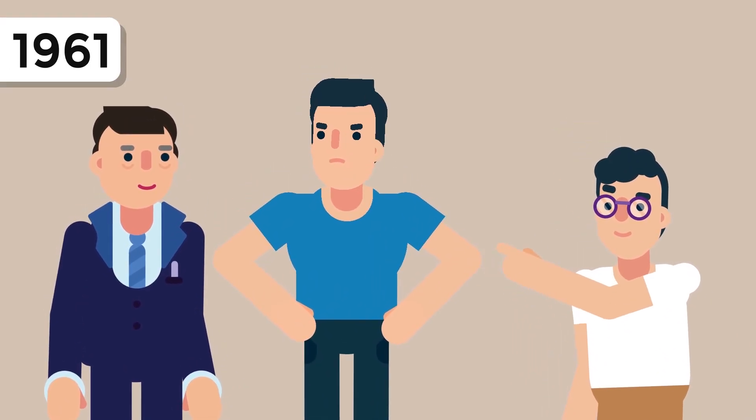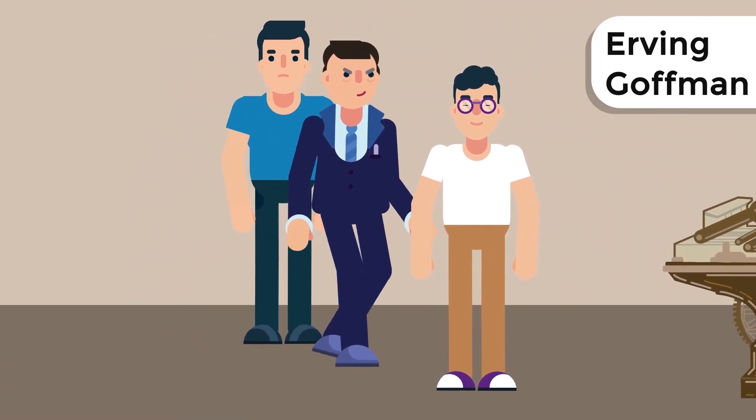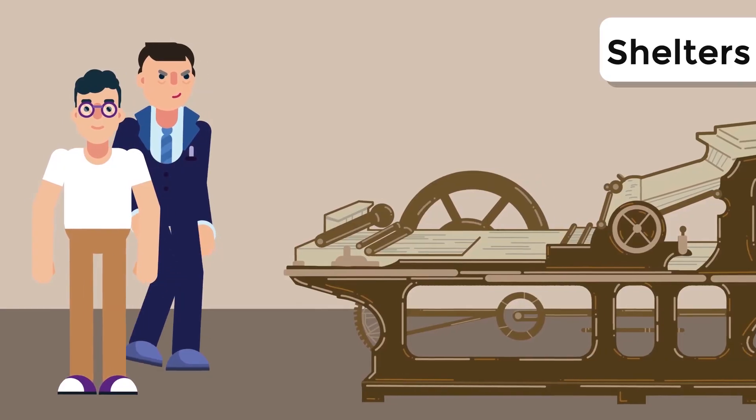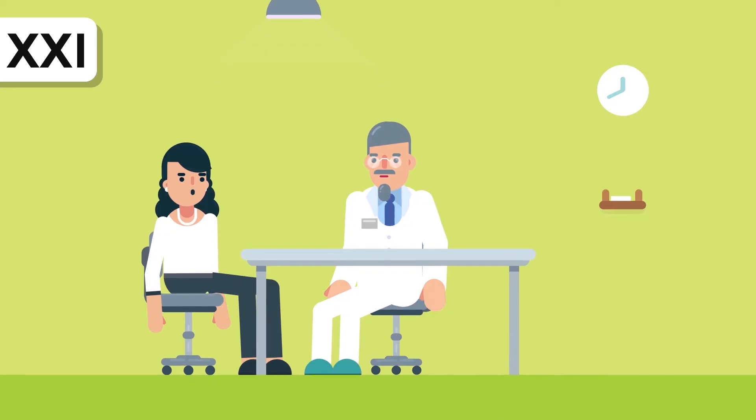Such thoughts have haunted psychiatrists even before Rosenhan's experiment. In 1961, the National Institute of Mental Health urged sociologist Irving Goffman not to publish his book Asylums, wherein he wrote that anyone locked up in a mental hospital, even a healthy person, would lose their mind.